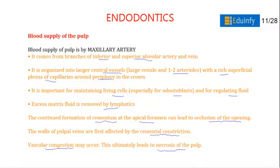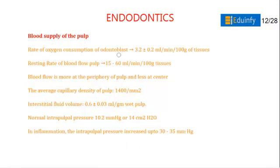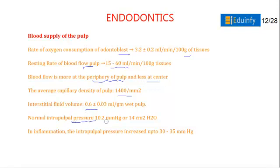Vascular congestion may occur with continued cementum formation, leading to necrosis of the pulp. The rate of oxygen consumption of odontoblasts is approximately 3.2. The resting rate of blood flow in the pulp is 15 to 60 milliliters per minute. Blood flow is greater at the periphery of the pulp and less at the center. Average capillary density is 1400. Interstitial fluid volume is 0.6 mL per gram wet pulp. Normal intrapulpal pressure is 10.2 mmHg.